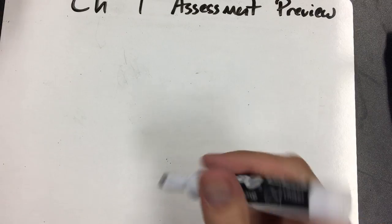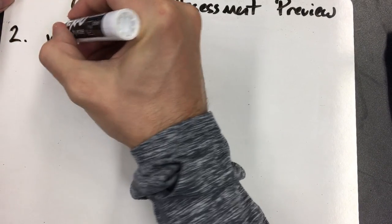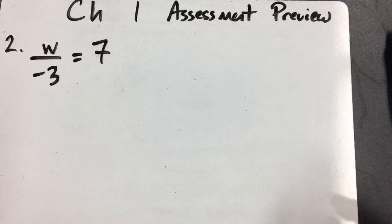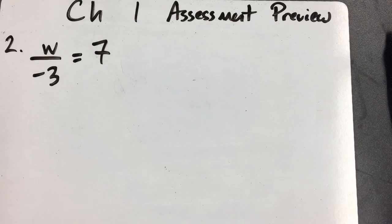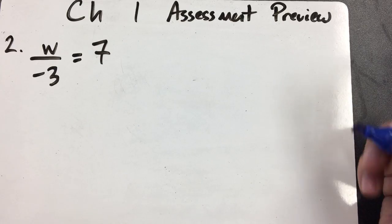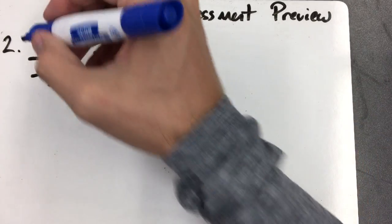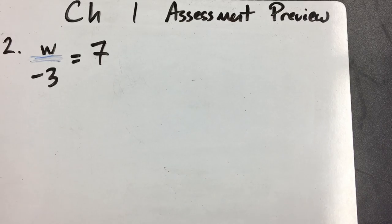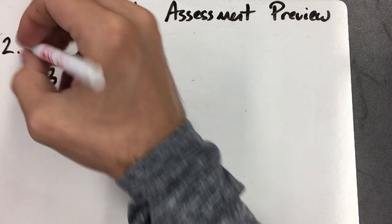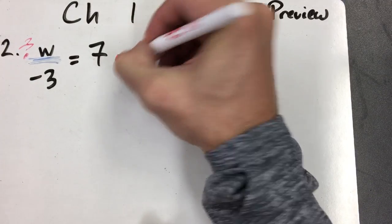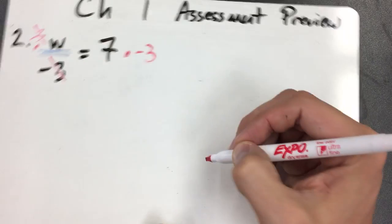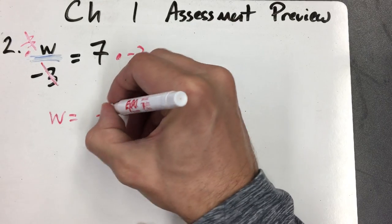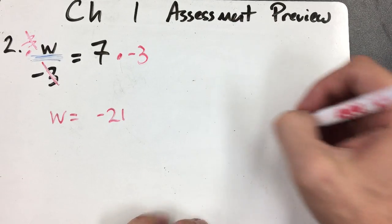Number two is going to be very similar to number one, but this one looks a little more difficult. It involves w divided by negative 3. A fraction is a way of showing division, so to undo division by negative 3, you multiply by negative 3. Whatever you do on one side, you do the same on the other — multiplying and dividing cancel each other out, and you get w equals 7 times negative 3, which is negative 21. You would type negative 21 in the box.